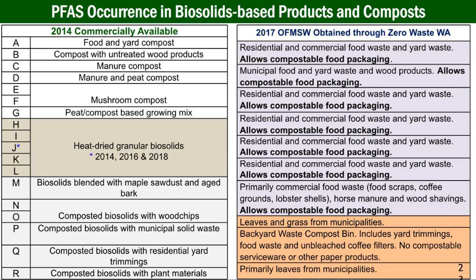I'm going to show you some actual data for bio-based products and composts. In a couple of studies we did, we looked at several different commercially available biosolids. Back in 2014 we also grabbed a few other kinds of compost. A through G here would be other kinds of compost that aren't biosolid-based. H through R are all biosolid-based, with the ones in the shaded area being the ones you might be most familiar with — the heat-dried granular biosolid fertilizers you can buy at Home Depot and Walmart. Plants love biosolids, and even with high PFAS loads you will not see that in terms of plant health. Plants love this organic-rich, low-nutrient-release material. On the right I'm showing you several different composts.